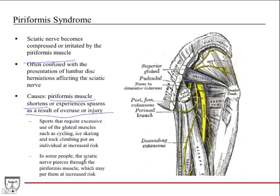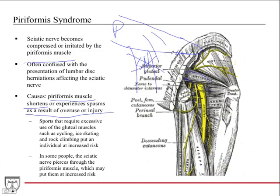In some people, the sciatic nerve actually pierces through the piriformis muscle rather than exiting below it. This anatomical variant puts these individuals at even greater risk of piriformis syndrome, because if the muscle gets even slightly irritated, enlarged, or inflamed, it can compress the nerve and cause significant problems.